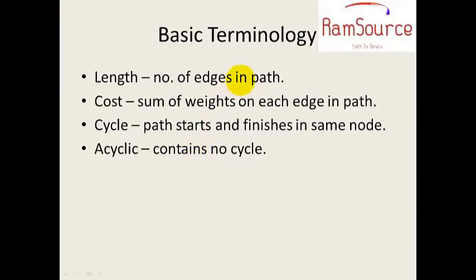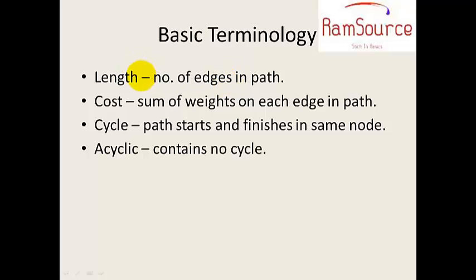Basic terminology: first is length, which is the number of edges in a path. For example, in a path from A to C — going A to B, then B to C — that path has a length of 2. That is what graph length means.